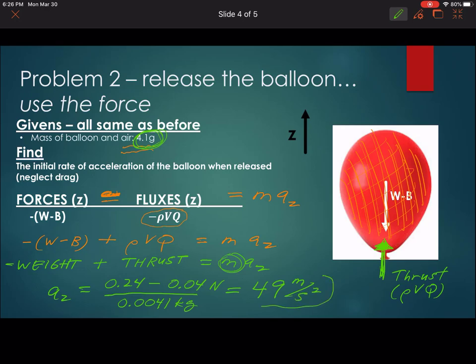So this is Newtons over kilograms, which will give us meters per second. If you do that, you get another number close to 50, which is 49 meters per second squared. And that is the rate of acceleration of this entire balloon as soon as you release it. This is similar to the water rocket problem where you release it and then you have all of this rho VQ that's acting to accelerate the entire system upward.